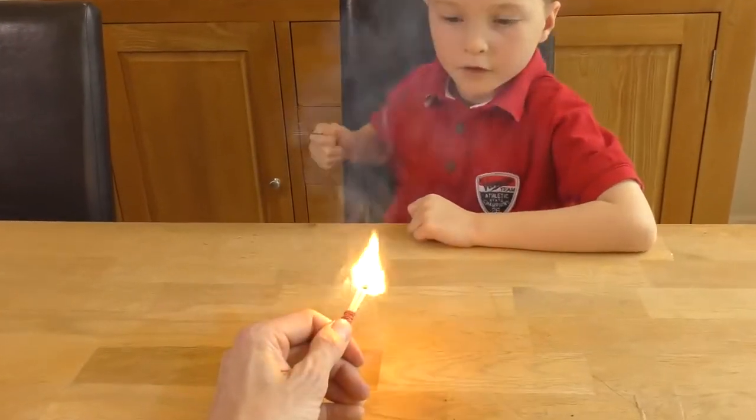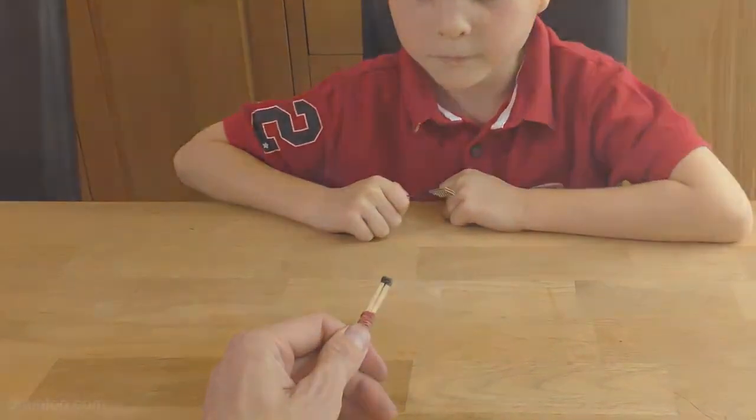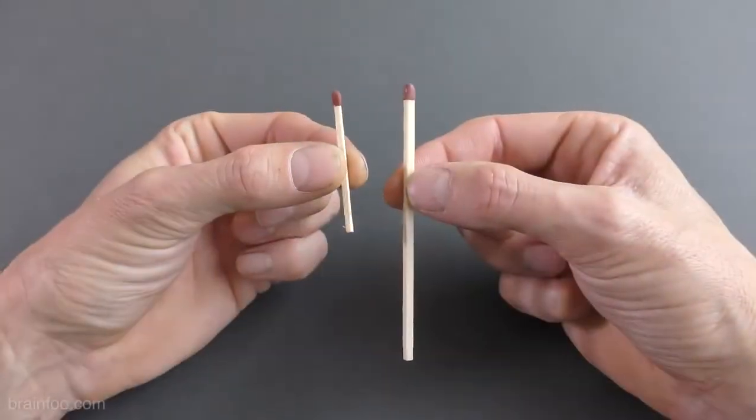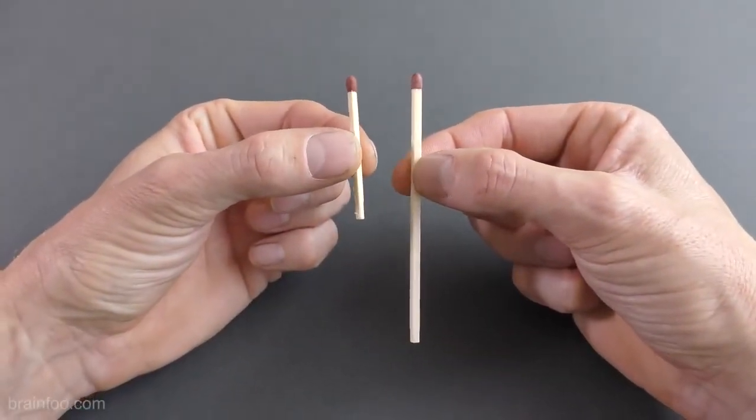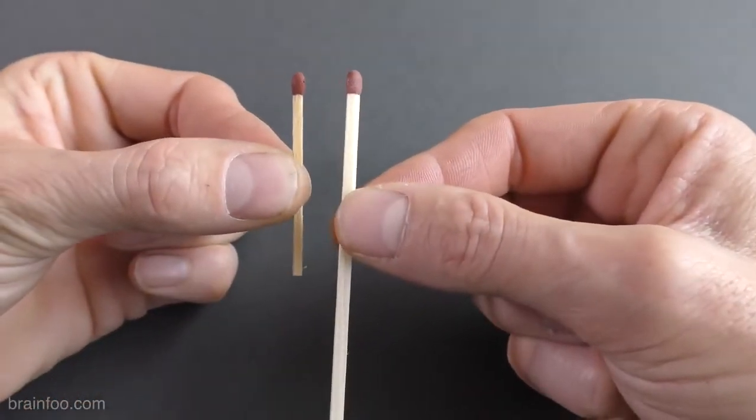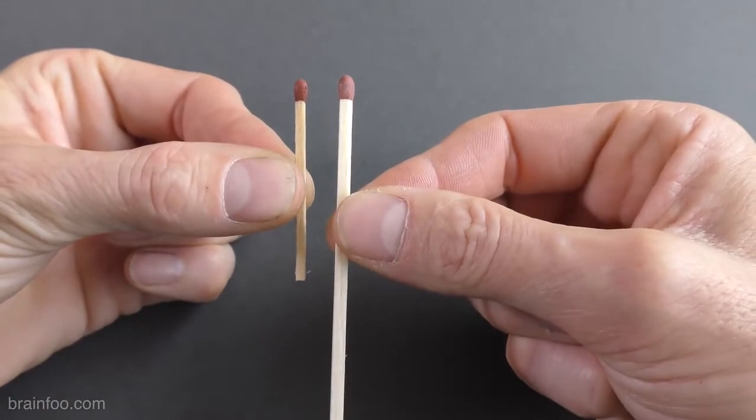The only thing we're going to need for the pull start ignition are some extra long strike on box safety matches like these and an elastic band. If we compare these to regular matches you can see that they're not just longer but they're thicker so they don't break so easily. And it's this extra thickness that we're going to exploit.